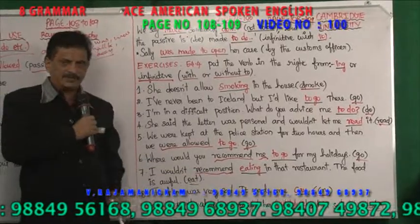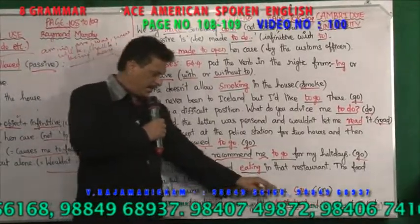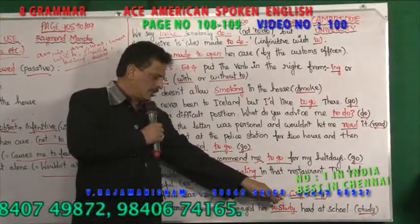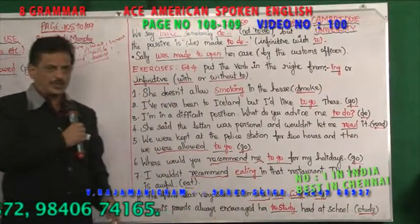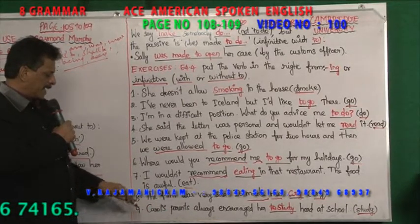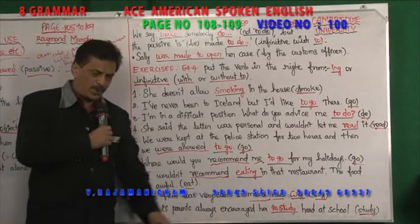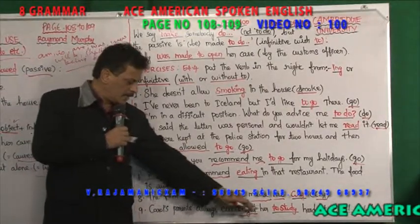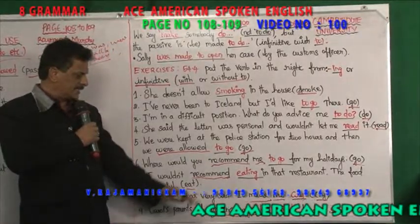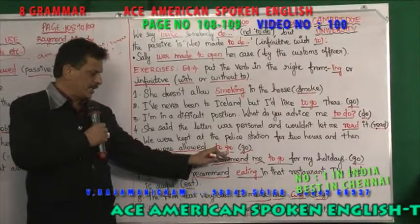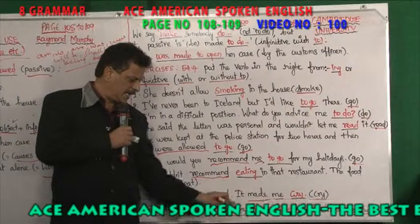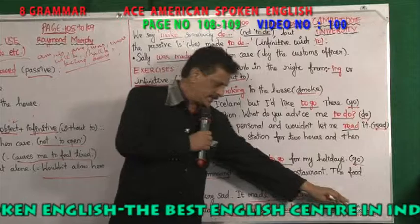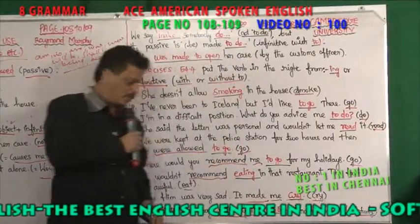'The film was very sad. It made me cry.' After 'made' you get the object 'me', then you use the bare infinitive — not 'to cry', only 'cry'. 'Carol's parents always encouraged her to study hard at school.' After 'encouraged' plus object 'her', you use the infinitive 'to study'.